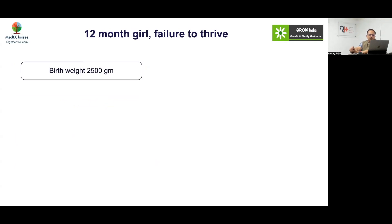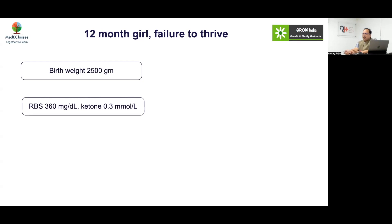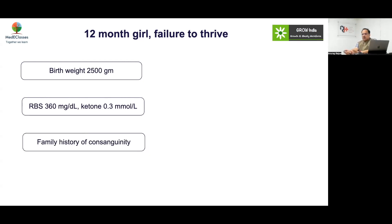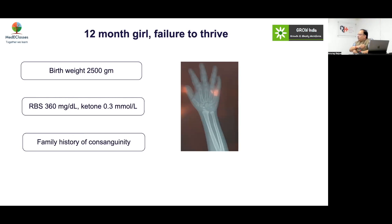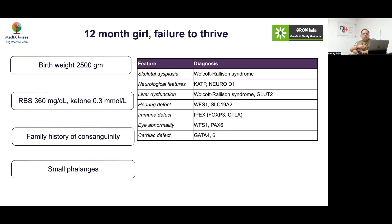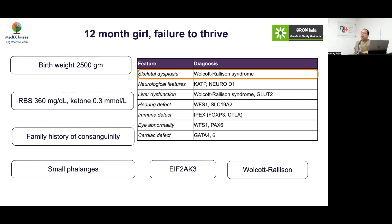Case 6: A 12-month-old girl with failure to thrive, birth weight 2500 g, blood sugar 360, non-ketotic, family history of consanguinity. What is the most significant genetic cause linked to consanguinity and diabetes? Most monogenic forms of diabetes are autosomal dominant, so which ones are recessive? This is most likely Wolcott-Rallison syndrome. If you have digit abnormality, skeletal dysplasia, and a family history of consanguinity, Wolcott-Rallison is a very important diagnosis to consider.